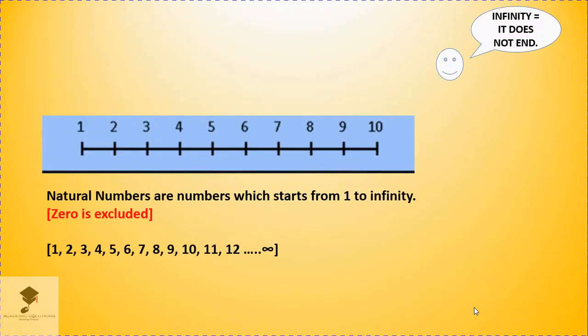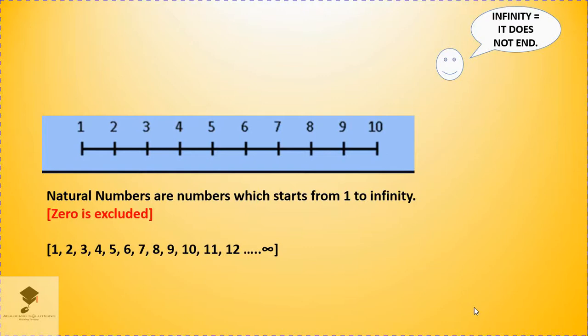Now, natural numbers are numbers which start from 1 to infinity. And by infinity, we mean it does not end. So this number excludes 0. So, looking at our number line on the screen, the number starts from 1, 2, 3, 4 and they continue to infinity.